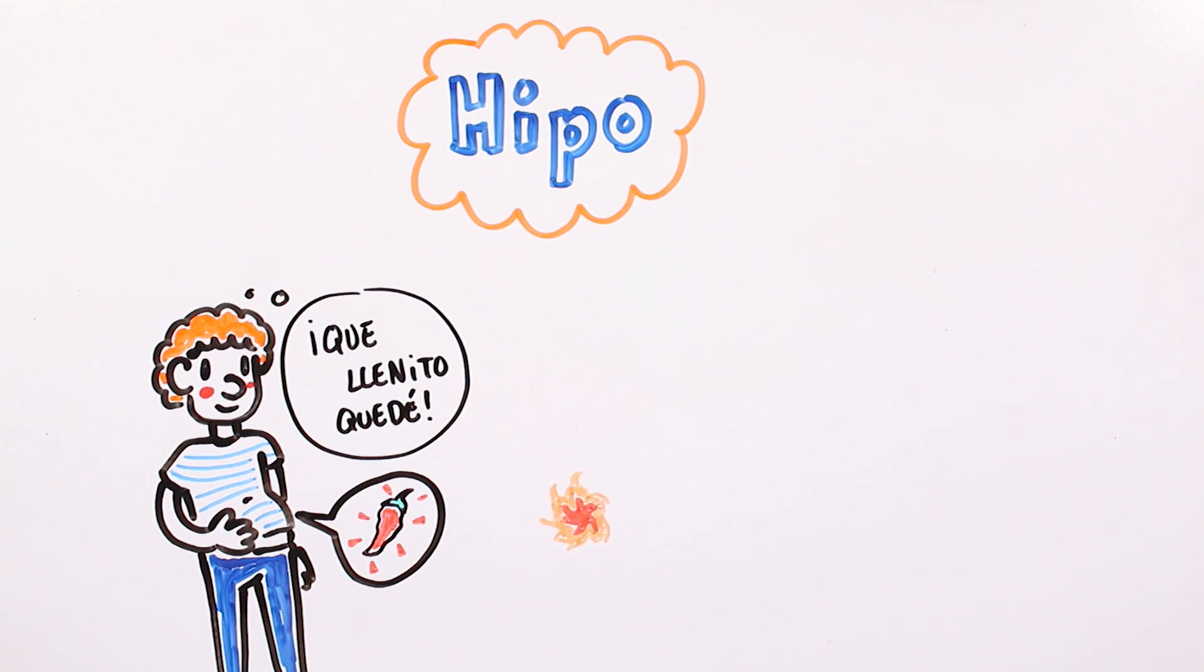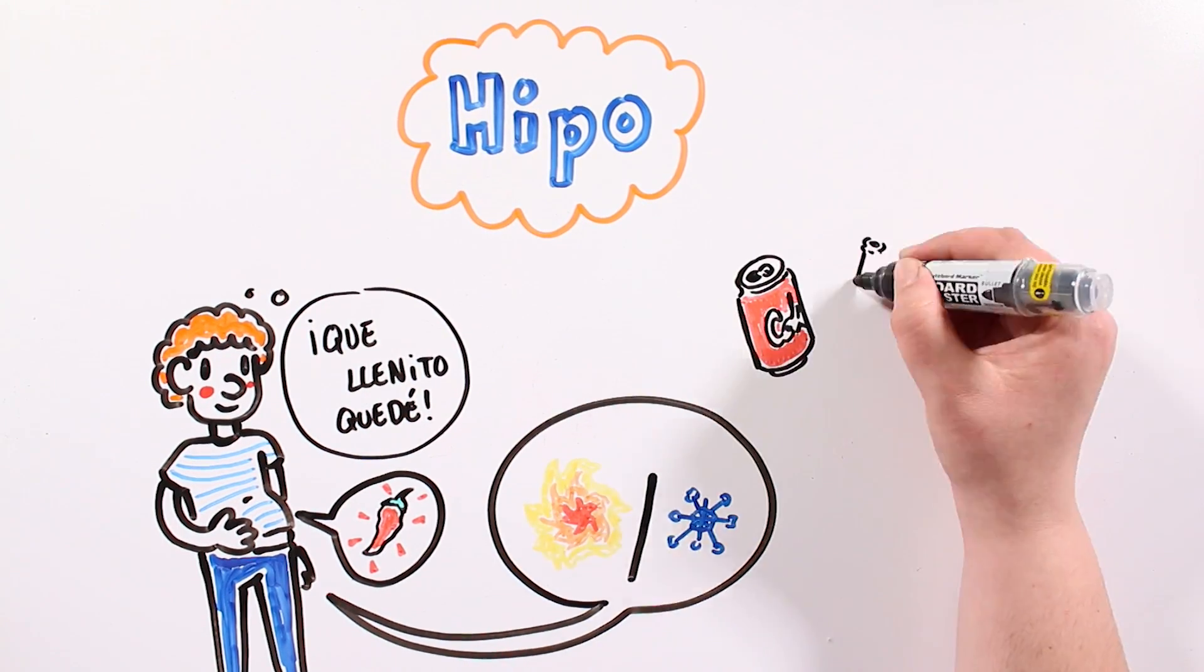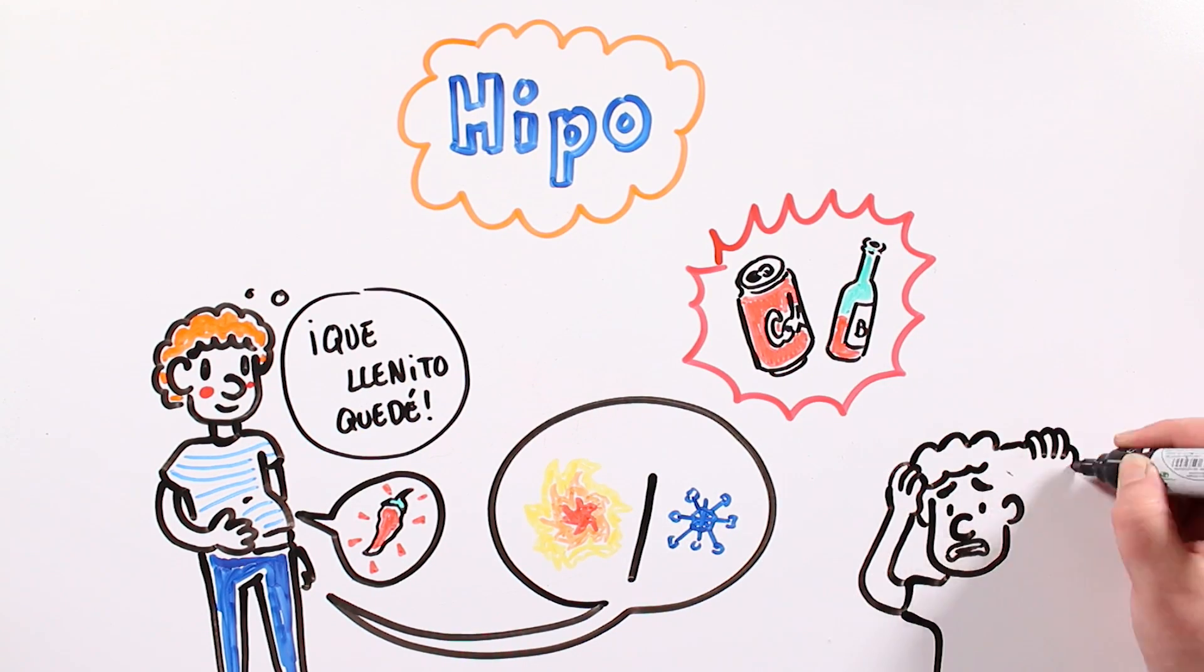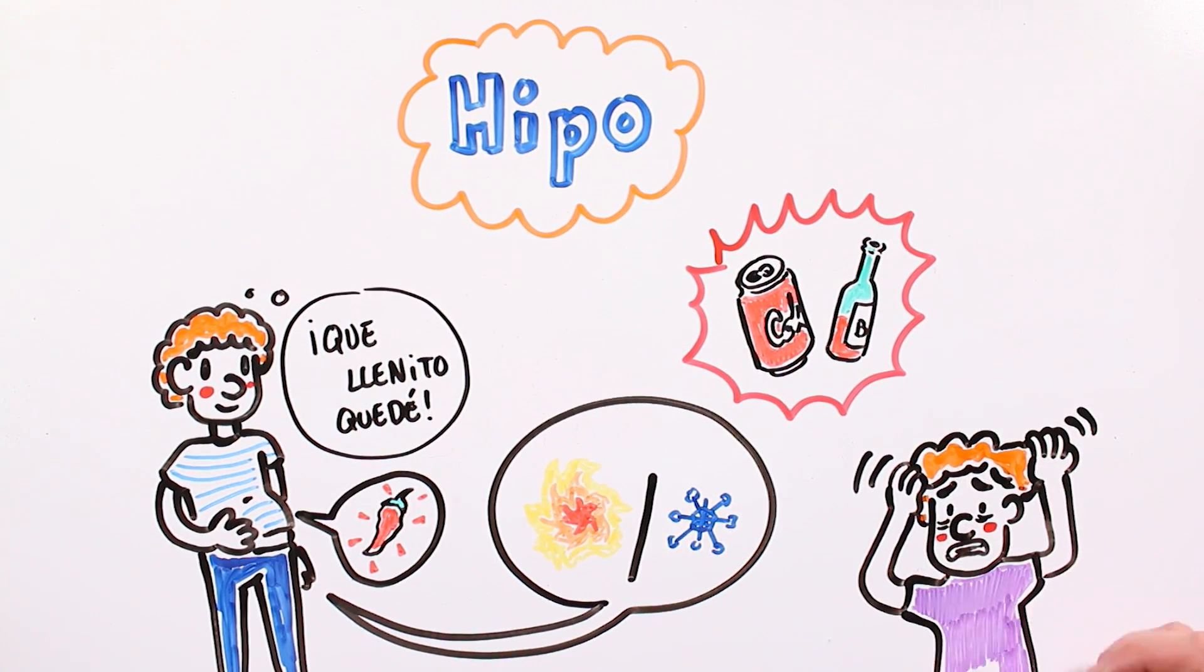It also increases with brusque temperature changes in the stomach, the consumption of soda pop or with alcohol. Other possible reasons behind a hiccup crisis are problems such as stress or heartburn.